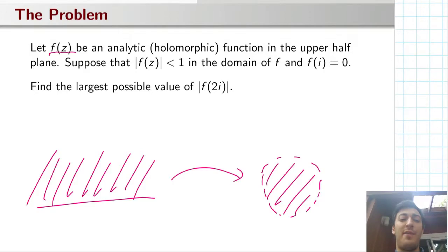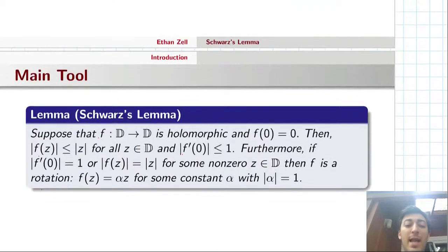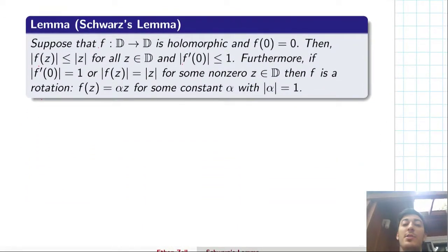Now, immediately we don't know what to do with that information, but let's look at what we're trying to solve. We want to find the largest possible value of the modulus of f(2i). So I said this was going to be an application of Schwarz's lemma, so let's remind ourselves of what Schwarz's lemma is.